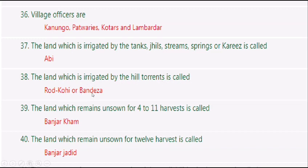The land which is irrigated by hill torrents is called Rodkoh. The land which remains unsown for 4 to 11 harvests is called Banjar Kham. The land which remains unsown for 12 or more harvests is called Banjar Jaydaad.